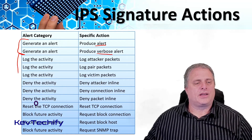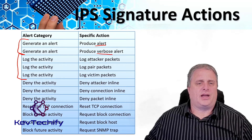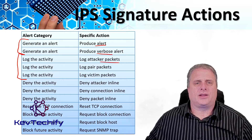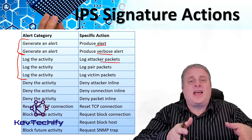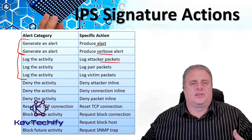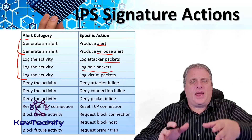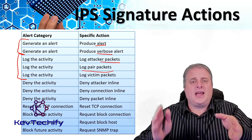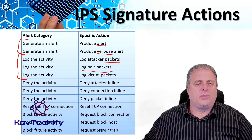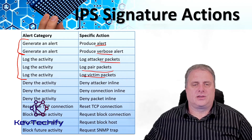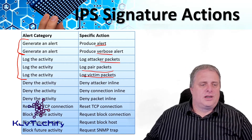Next, we can log the activity, with three different actions available. We can log the attacker packets — this logs packets from the attacker IP address and sends an alert. We can log pair packets, which logs packets from both the victim and attacker IP addresses and sends an alert. And finally, we can log victim packets, which logs packets from the victim IP address and sends an alert.